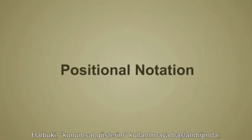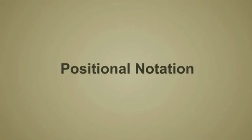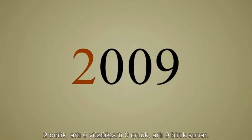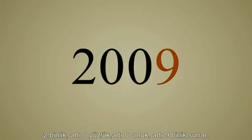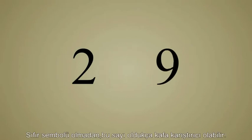However, once positional notation was invented, a symbol to represent zero was needed as a placeholder for columns containing no digits. For instance, the number two thousand nine represents two thousands plus zero hundreds plus zero tens plus nine ones. Without the zero symbol, this number could get quite confusing.